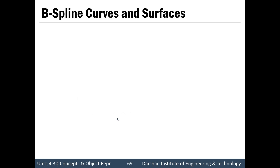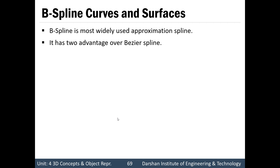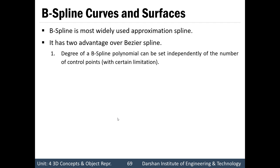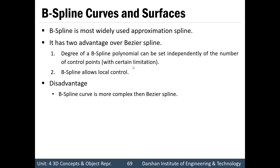A B-spline is the most widely used approximation spline. It has two advantages: first, the degree of the B-spline polynomial can be set independently of the number of control points, meaning it does not depend on the number of control points but with certain limitations. Second, B-spline allows local control, meaning we can modify a part of the curve without affecting other parts. The disadvantage is that a B-spline curve is more complex and requires more computation power compared to a Bezier spline.